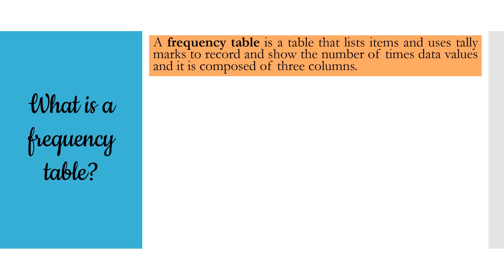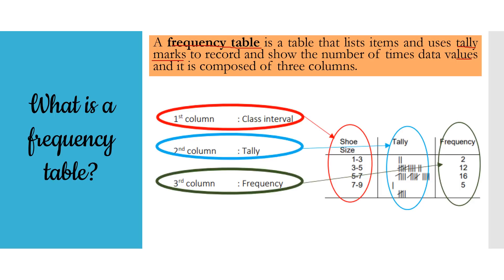This time let us define frequency table as a whole. A frequency table is a table that lists items and uses tally marks to record and show the number of times data values appear. It is composed of three columns: the first column shows the class interval, the second column shows the tally, and the third column shows the frequency.